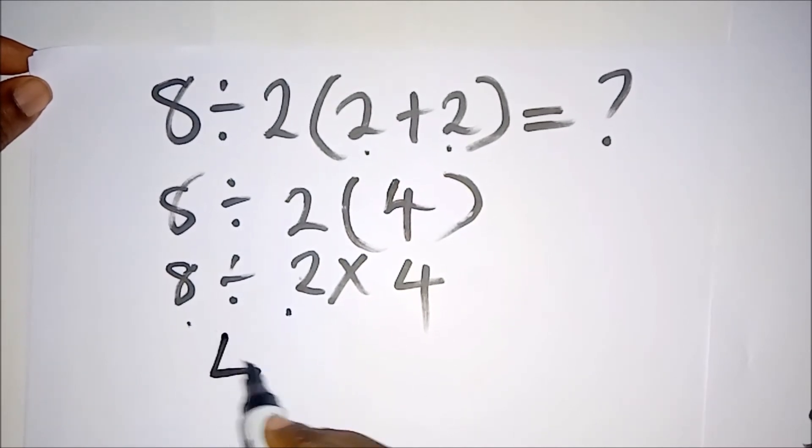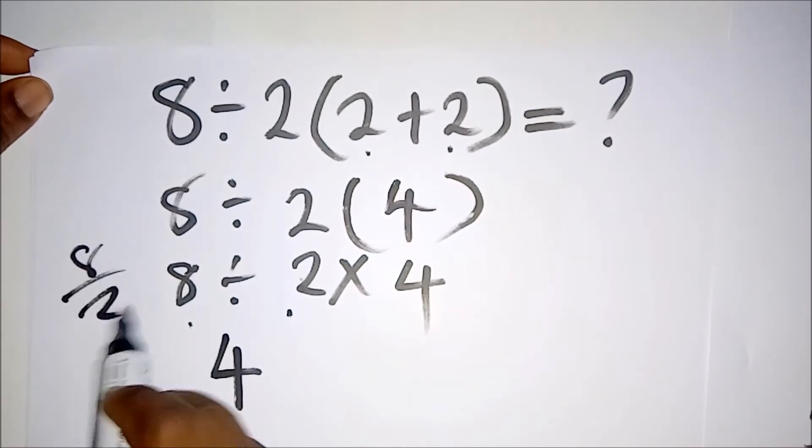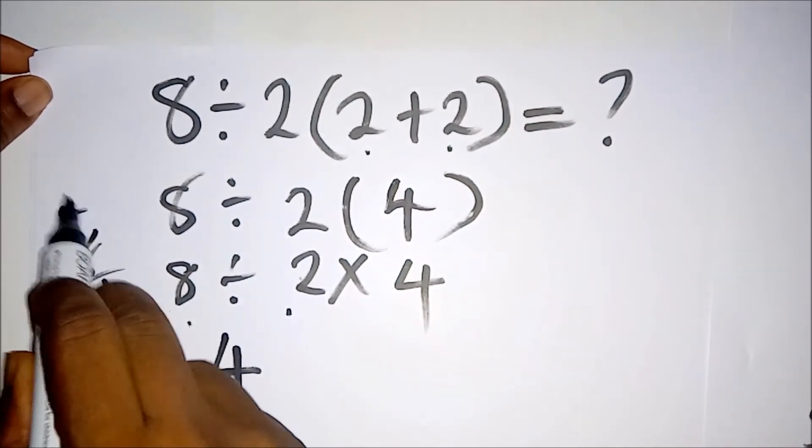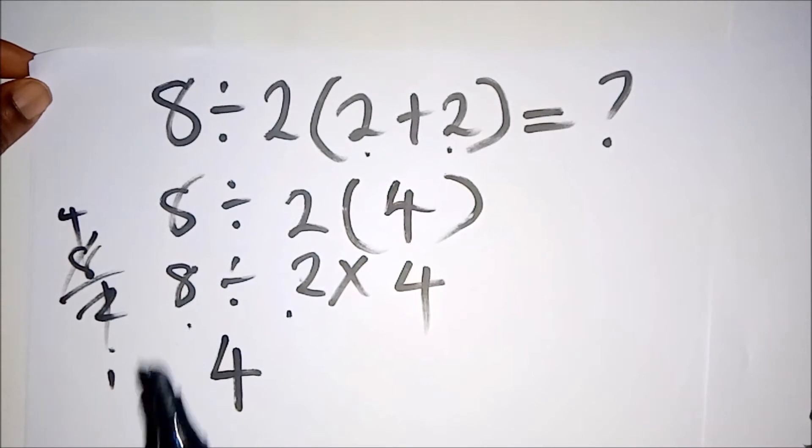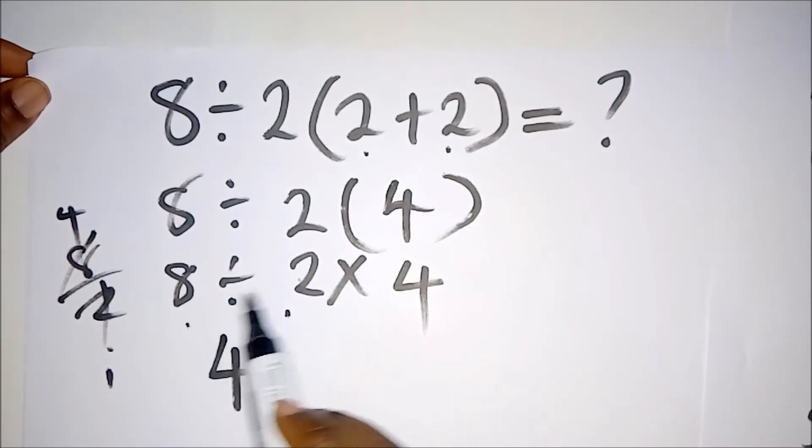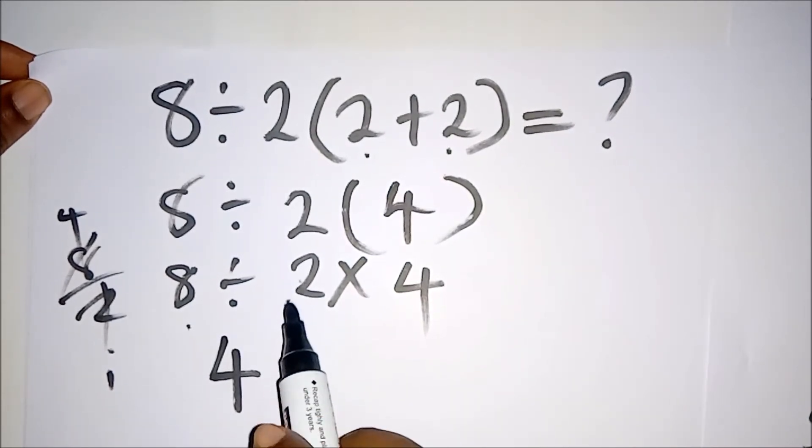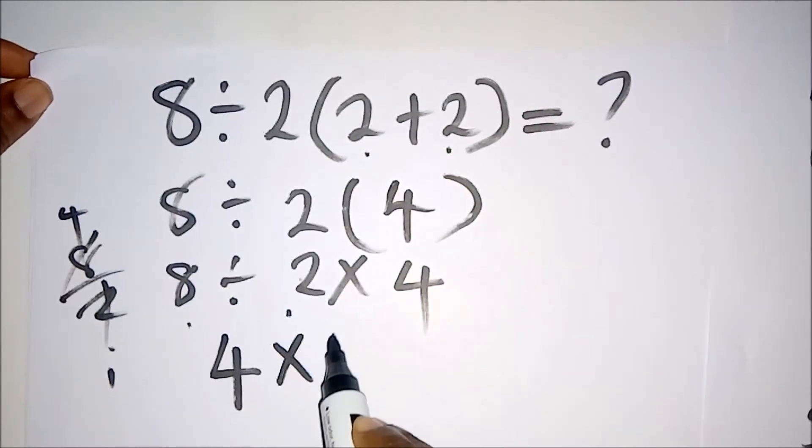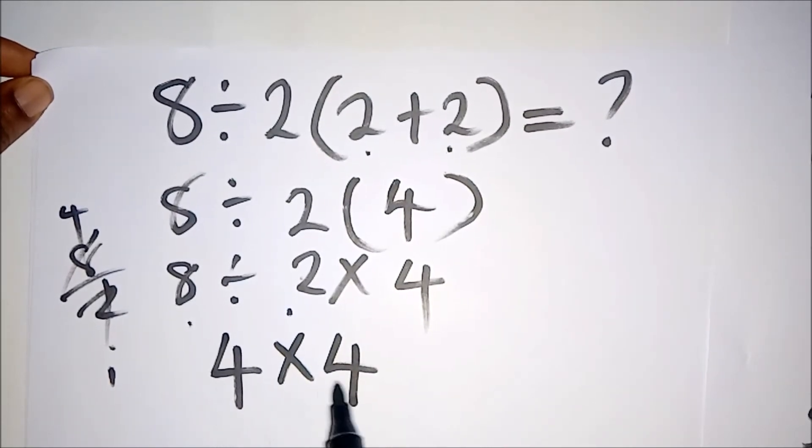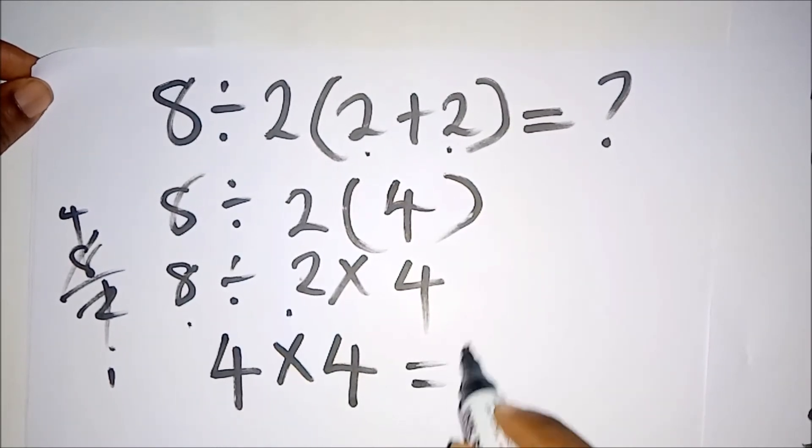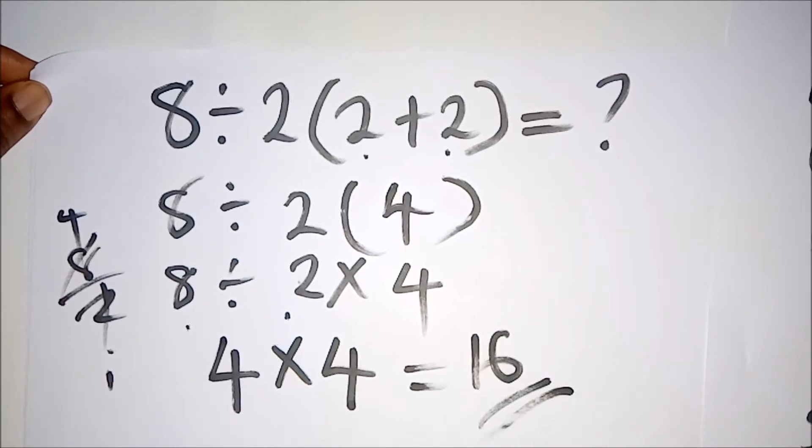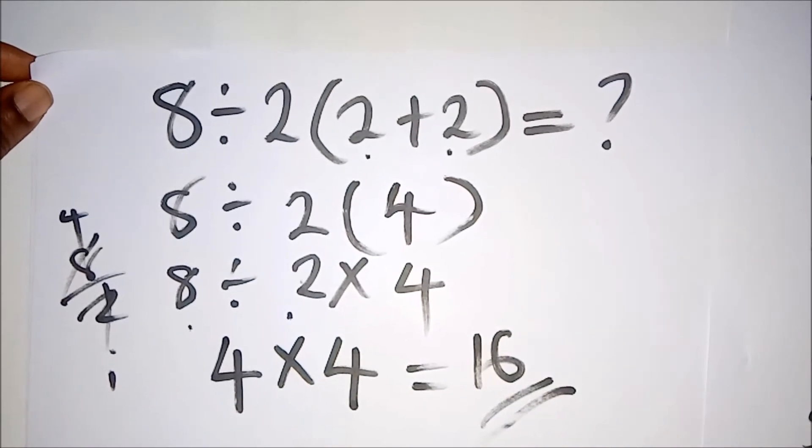We have to do 8 divided by 2. Remember, 8 divided by 2 is going to give us a 4, because 2 times 4 is 8. So 8 divided by 2 gives us 4. We drop our multiplication sign here, times 4. And what is 4 times 4? The answer is 16.